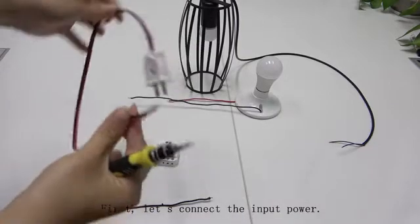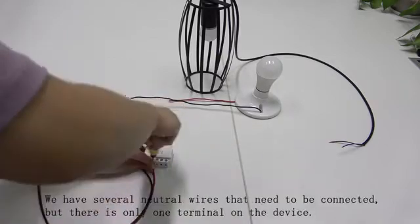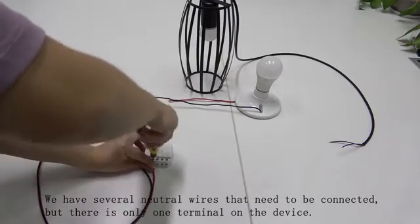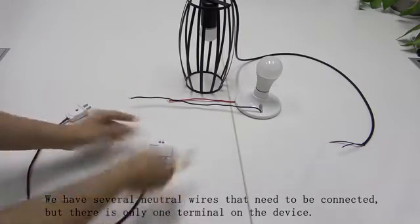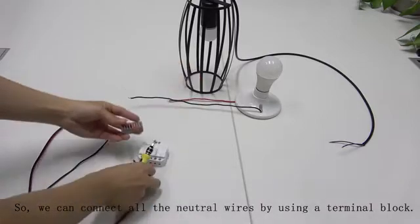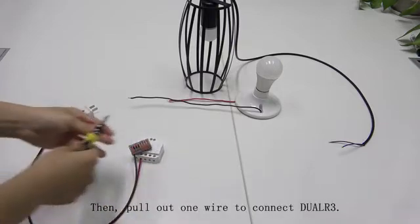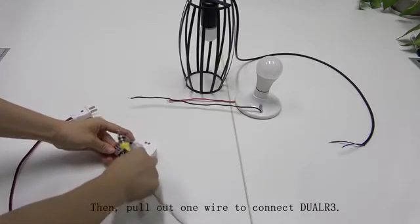First, let's connect the input power. We have several neutral wires that need to be connected, but there is only one terminal on the device. So, we can connect all the neutral wires using a terminal block. Then, pull out one wire to connect DUA3.